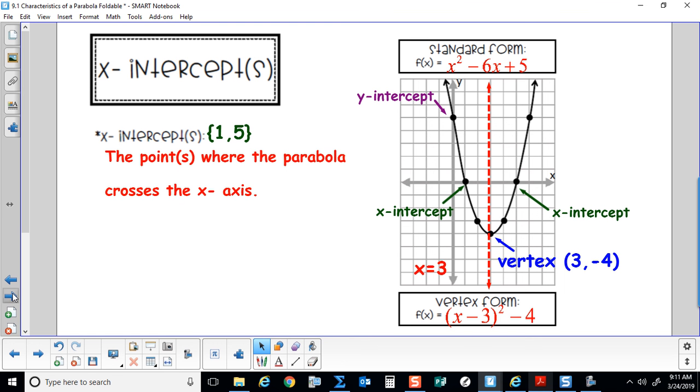The x-intercept, we have two in this instance, one and five. They are the points where the parabola crosses the x-axis.